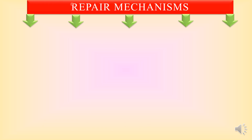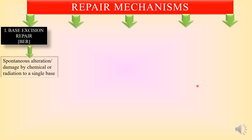Now we come to DNA repair mechanisms. We saw the various reasons that lead to DNA damage, and now we would like to see whether our body can repair these damages. The first repair mechanism is base excision repair, abbreviated as BER.